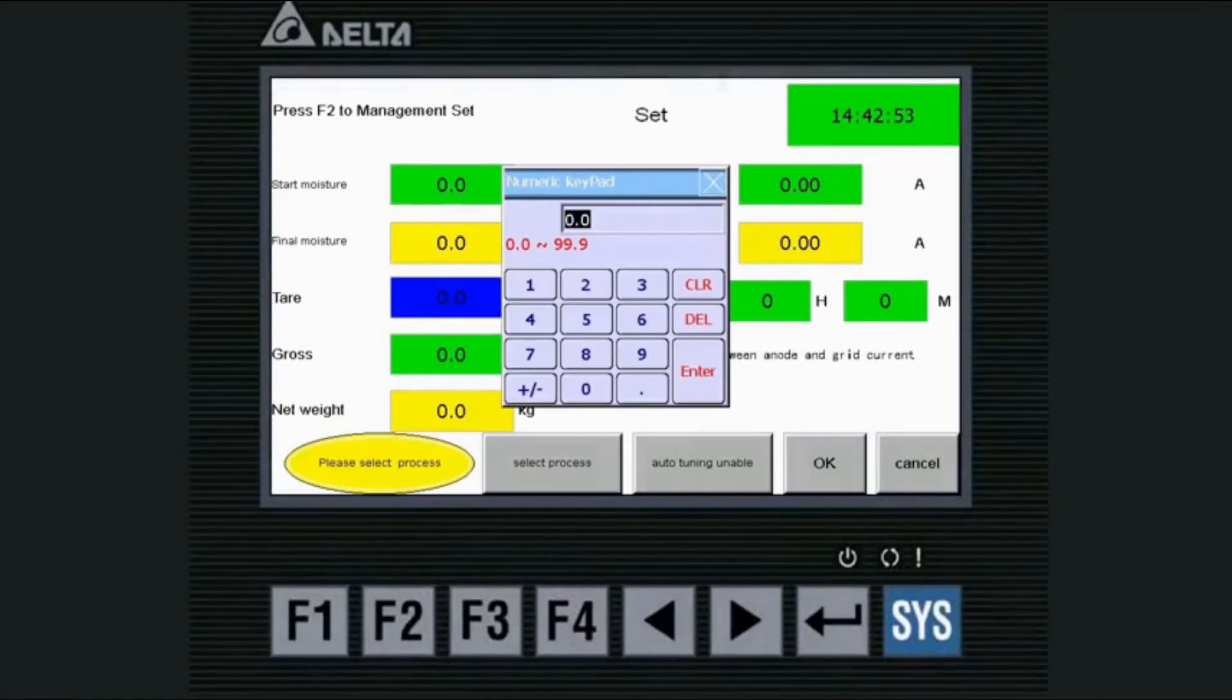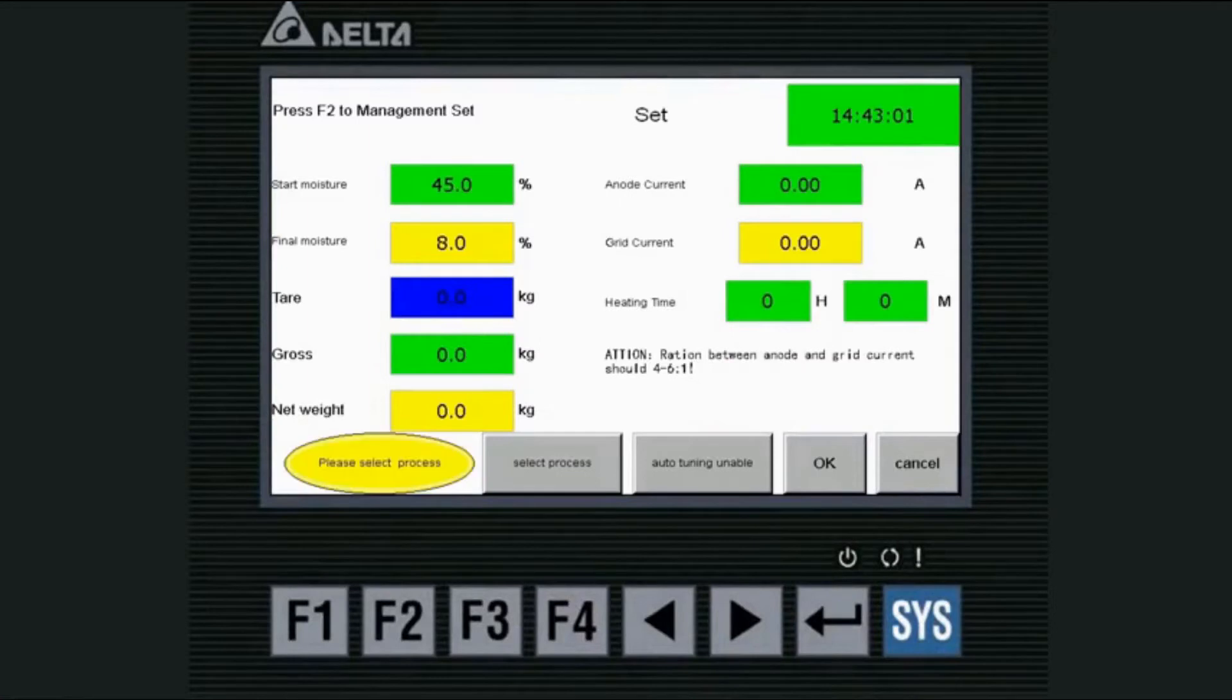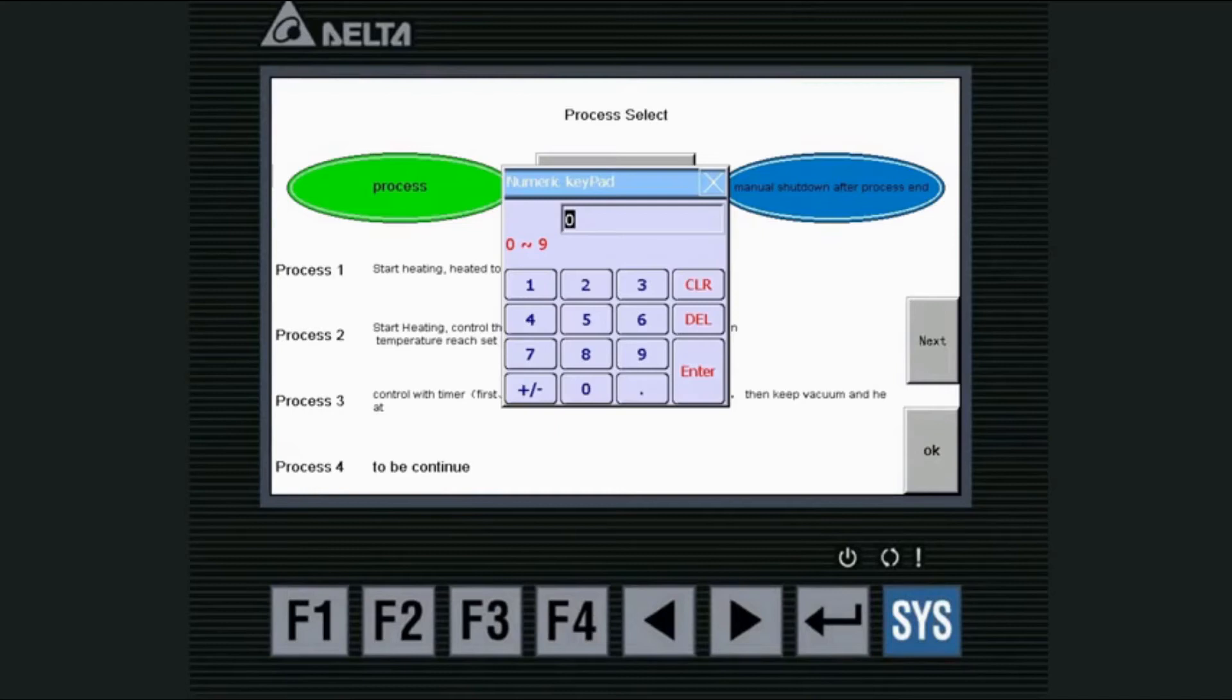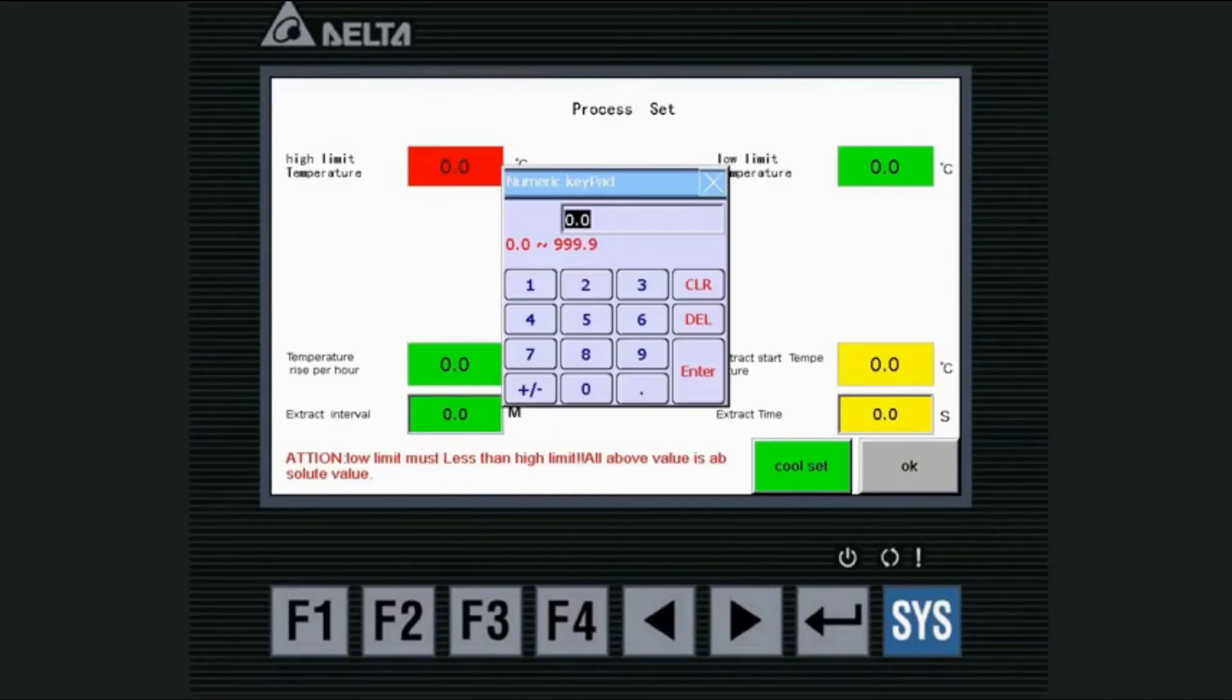Here we tell the machine the initial moisture of the wood, what end moisture we need, and set the program for your wood species. There is drying program for nearly 40 species of wood all over the world.